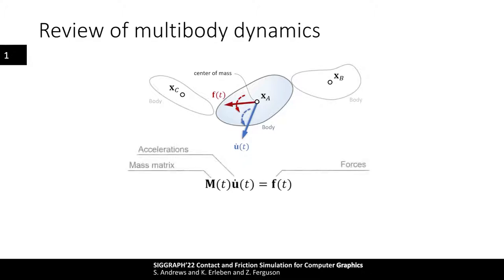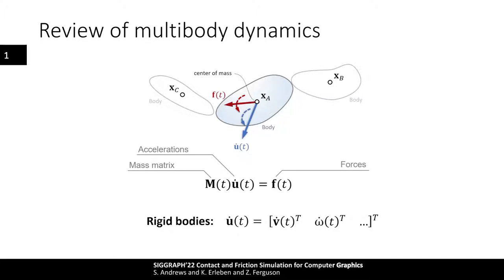Specifically, we use Newton's second law to compute the dynamical behavior of bodies. Note that the mass, acceleration, and forces all depend on time. For rigid bodies, the vector u-dot represents the generalized accelerations containing both linear and angular quantities, and similarly for forces there will be linear forces and torques. Whereas for soft bodies, the u-dot vector typically contains the linear accelerations of the nodal coordinates — for instance, the accelerations of the vertices of a tetrahedral mesh.